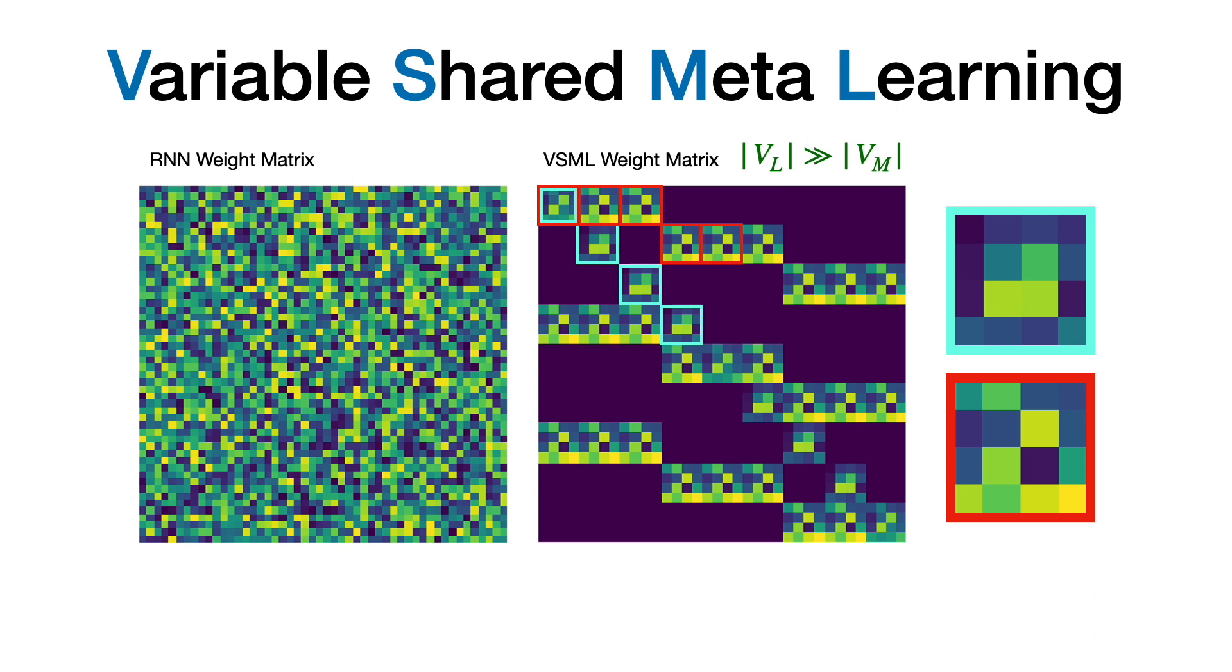Essentially, sharing the same meta-variables, the learning algorithm, in many locations. This means we can have arbitrarily many learned variables, or memory, while the number of meta-variables, or parameters, is fixed. So which sharing and sparsity scheme should we use?